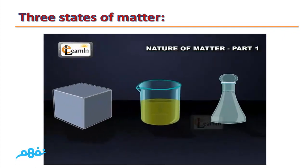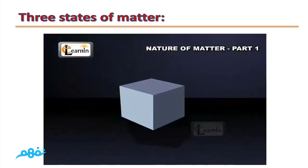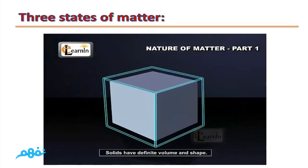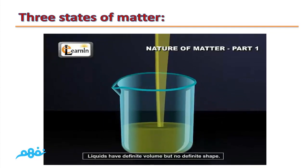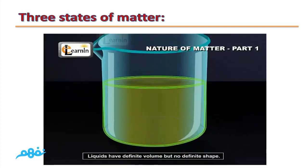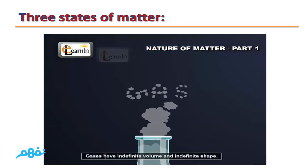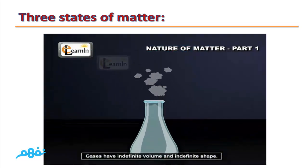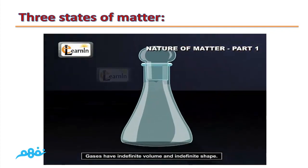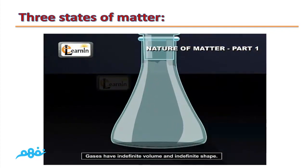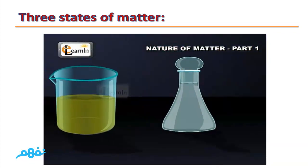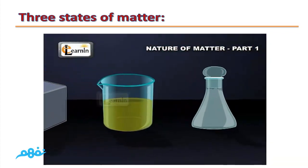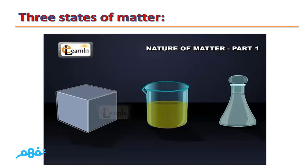Let's compare between shapes and volumes of the three states of matter. Solids have definite volumes and definite shape. Liquids have definite volume but indefinite shape. Gases have indefinite volume and indefinite shape — they take the volume and shape of their container. This was a quick comparison between the three states of matter.